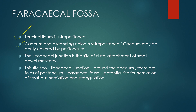The cecum may be slightly mobile, and some part of the cecum may be partly covered by peritoneum. This is the ileocecal junction, where the ileum is intraperitoneal and the cecum and ascending colon is retroperitoneal. The ileocecal junction is also the site of the distal attachment of the small bowel mesentery. So this site also contains certain fossa, because one structure is intraperitoneal and the other is retroperitoneal.